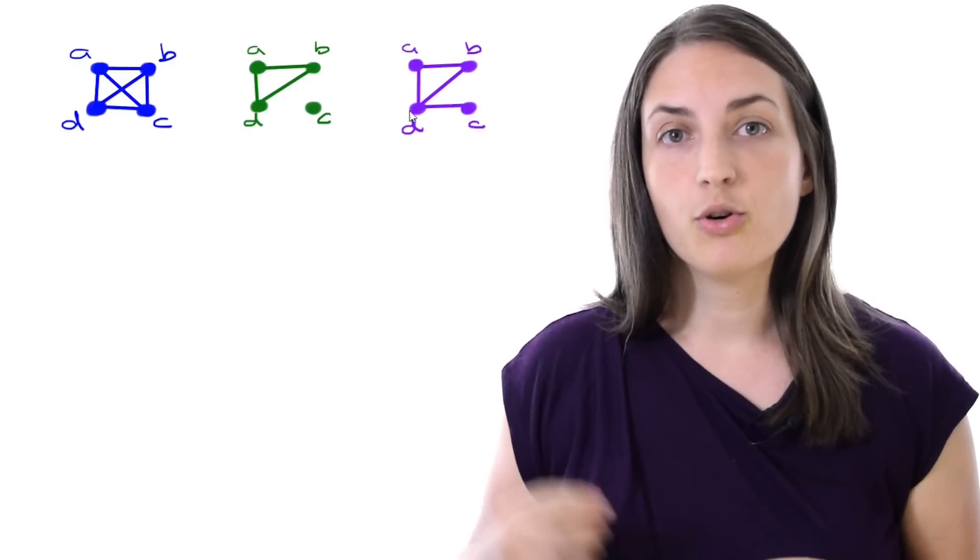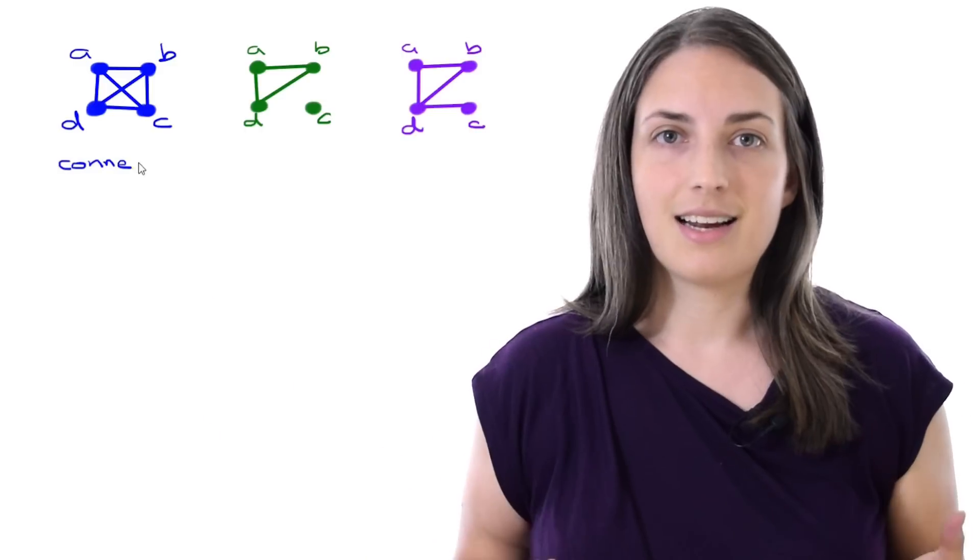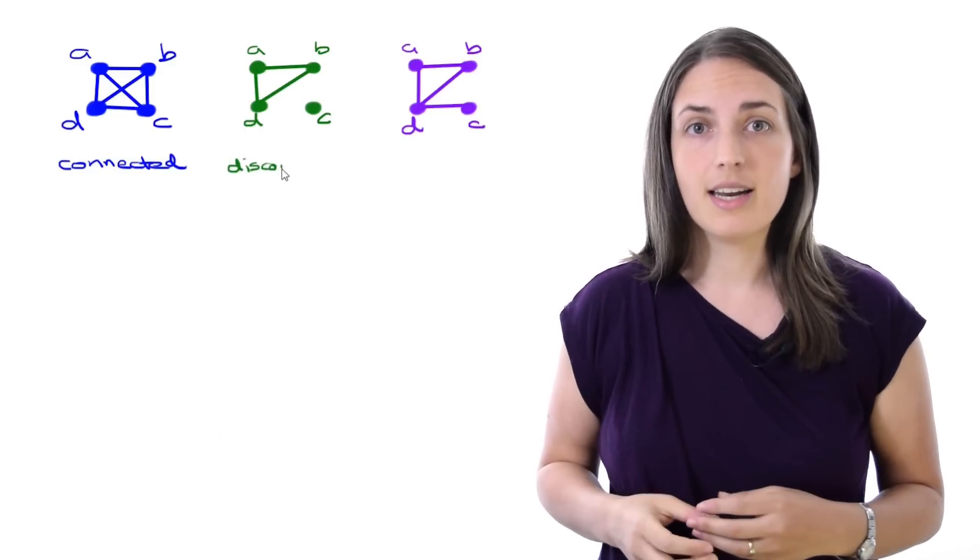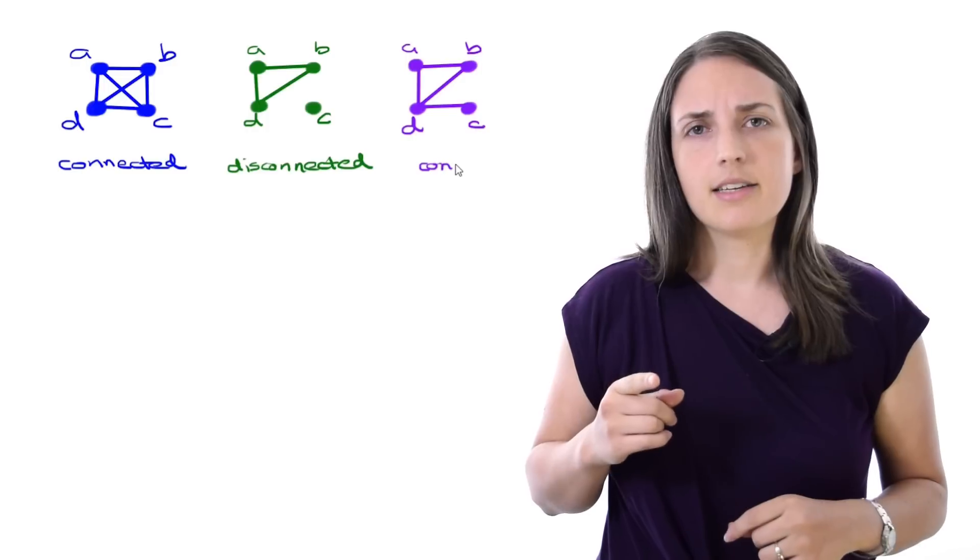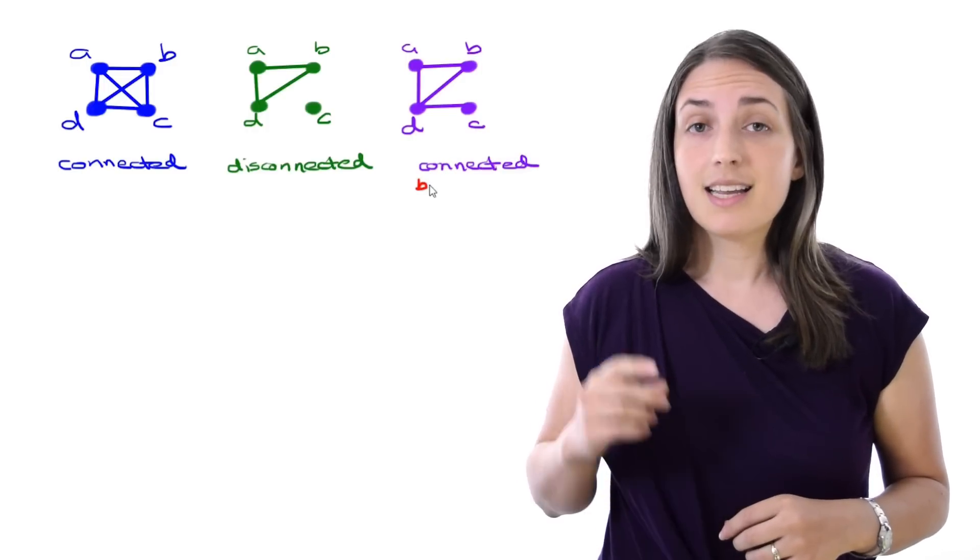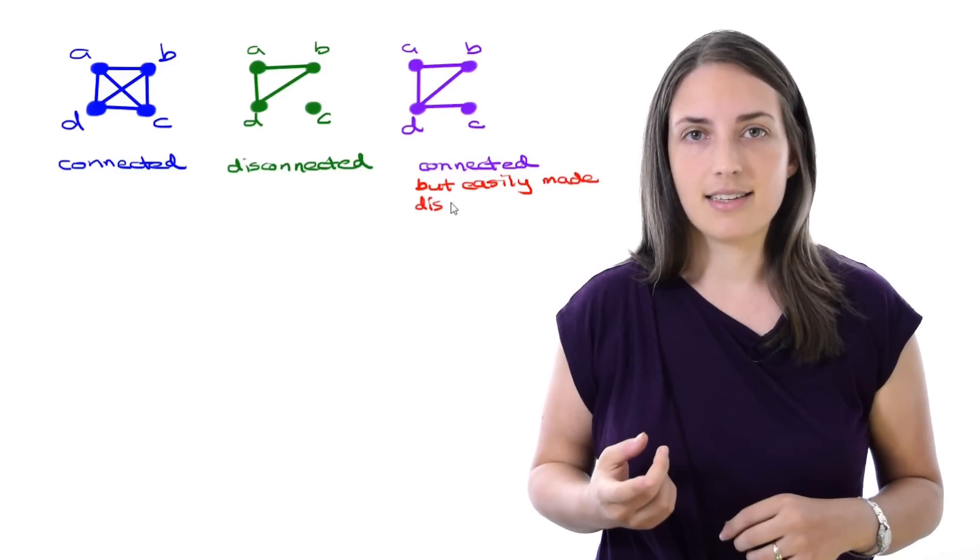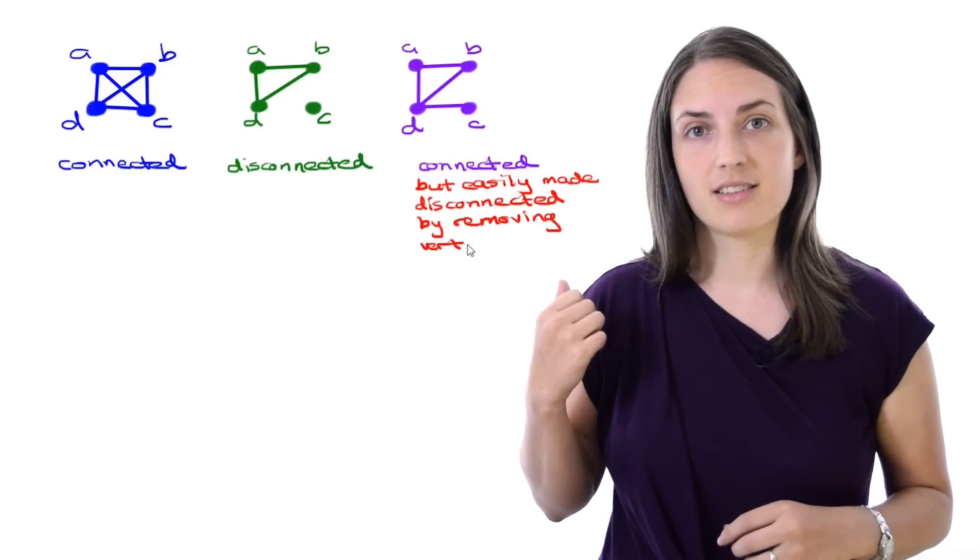Let's start with a bit of motivation. I'm going to draw three graphs up here in different colors, all with four vertices. Notice that the blue one on the very left is connected. The green one in the middle is disconnected, but the one on the right is connected but can easily be made disconnected if we just remove a vertex, vertex D.